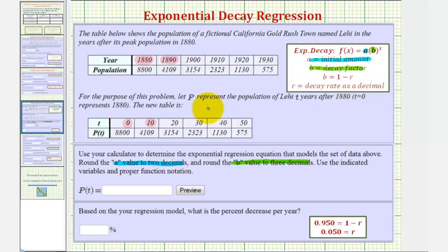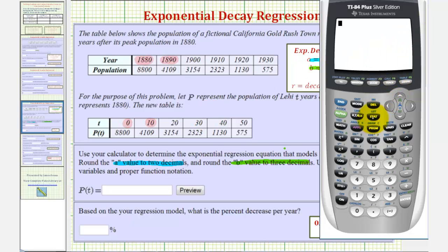For the first step, we want to enter the data into the calculator. To do this, we press the stat key, and then enter. To clear old data, we can go to the top of the column by pressing up, clear, and then enter. Now we'll enter t in L1, and p of t in L2. We press zero, enter, 10, enter, and so on. To move to L2, we press the right arrow, and enter p of t.